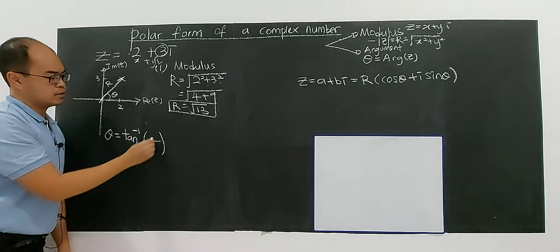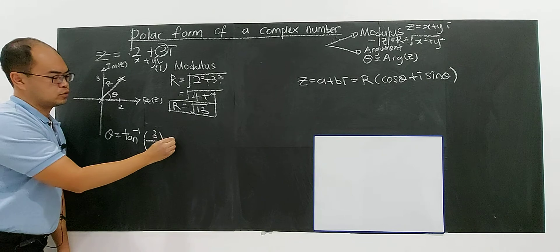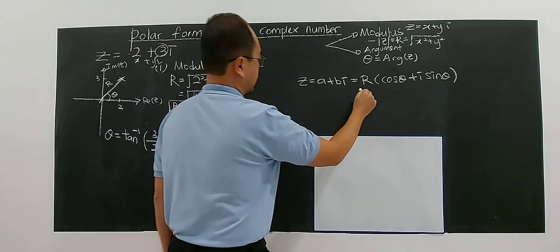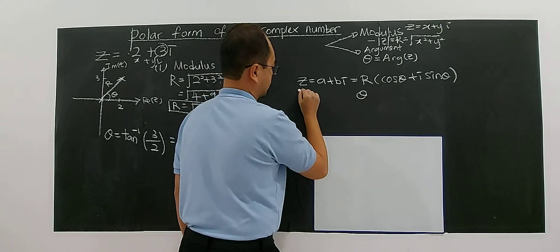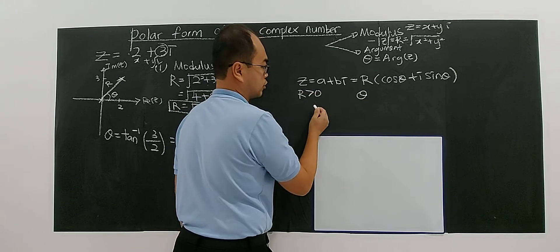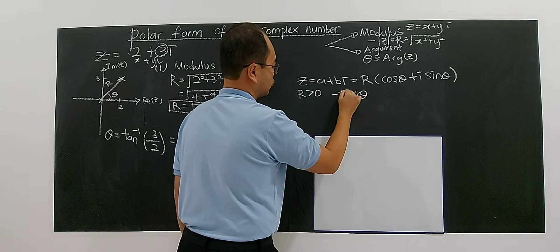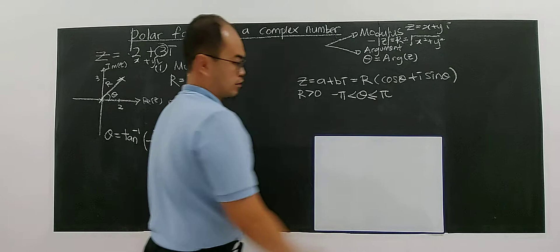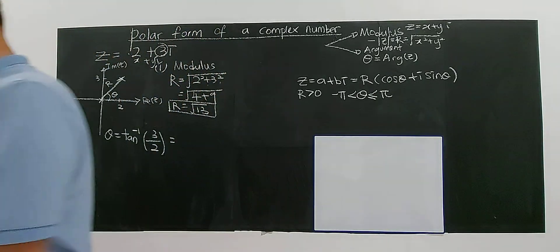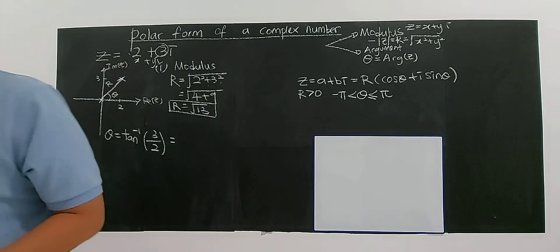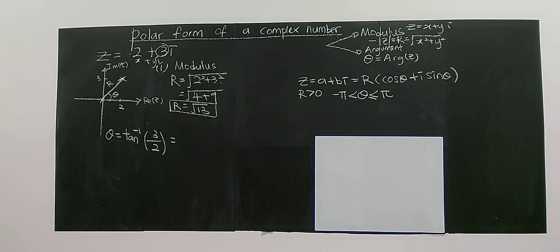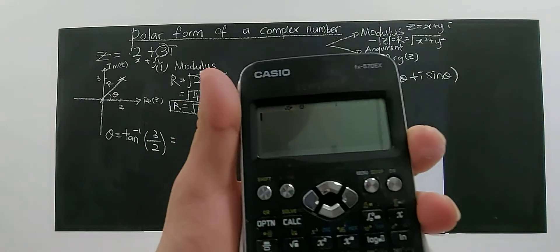You take the value of y, which is 3, divided by x, which is 2. Remember, the value of r is always positive, and theta is always between negative π and π in radians. You have to convert your calculator mode into radian form.